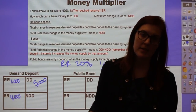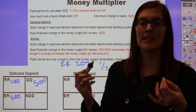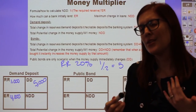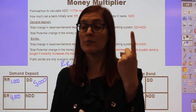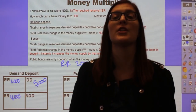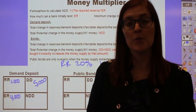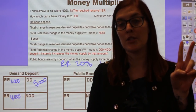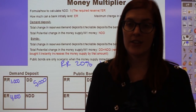You can't use a calculator on the AP exam, so they're not going to give you super complicated reserve requirements. They usually only give you four different scenarios: 10% — 1 over 0.1, multiplier is 10; 20% — 1 over 0.2, multiplier is 5; 25% — 1 over 0.25, multiplier is 4; or 50% — 1 over 0.5, multiplier is 2. They only give you ones that most people can solve in their heads.